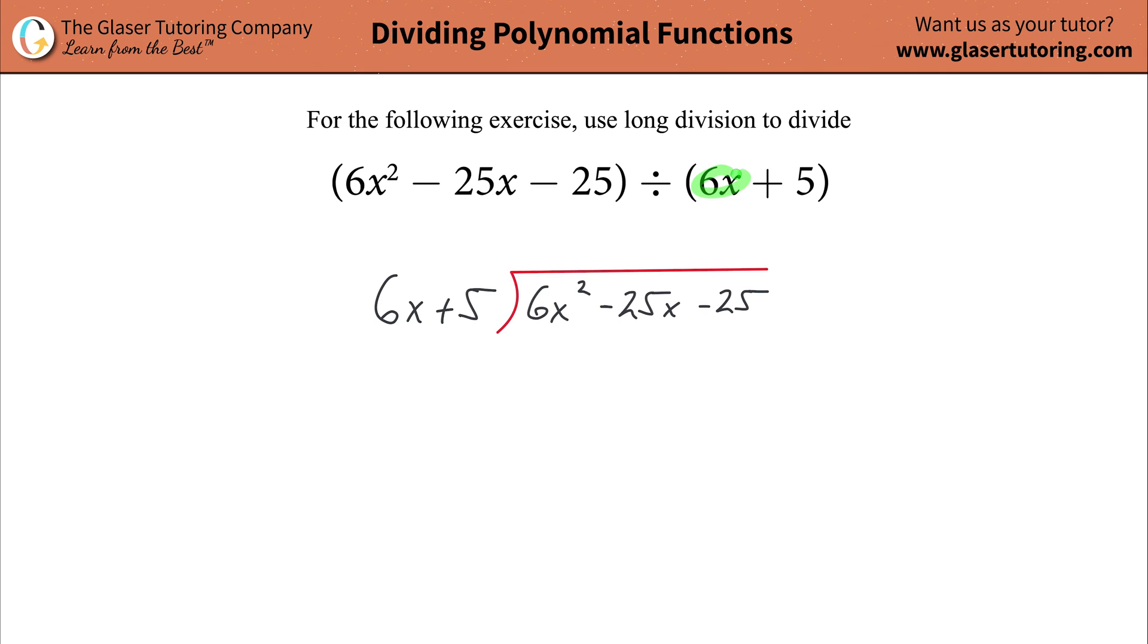Basically, what's on the right-hand side of your division symbol gets placed on the outside here of your long division symbol, and then what's on the left would get plugged inside. Now that we have this set up, how do we approach solving the problem?